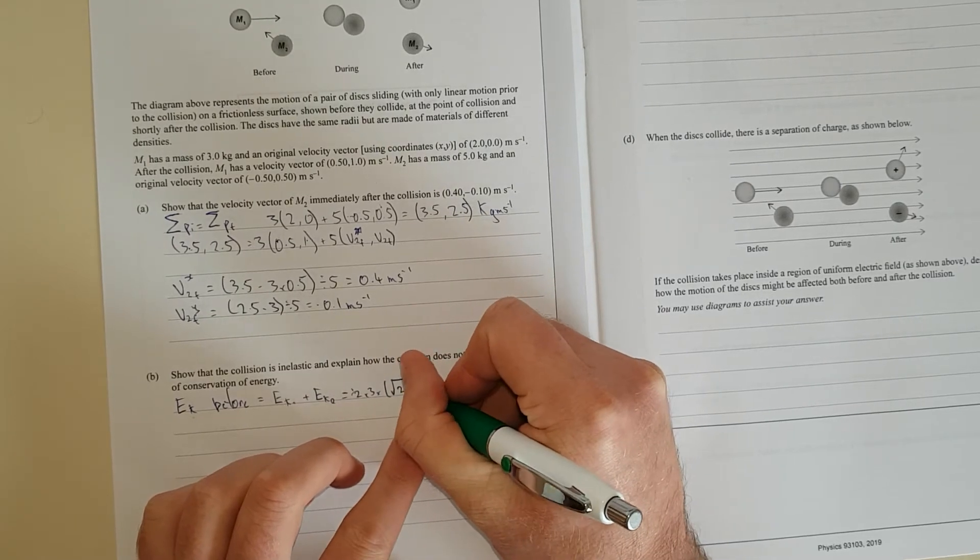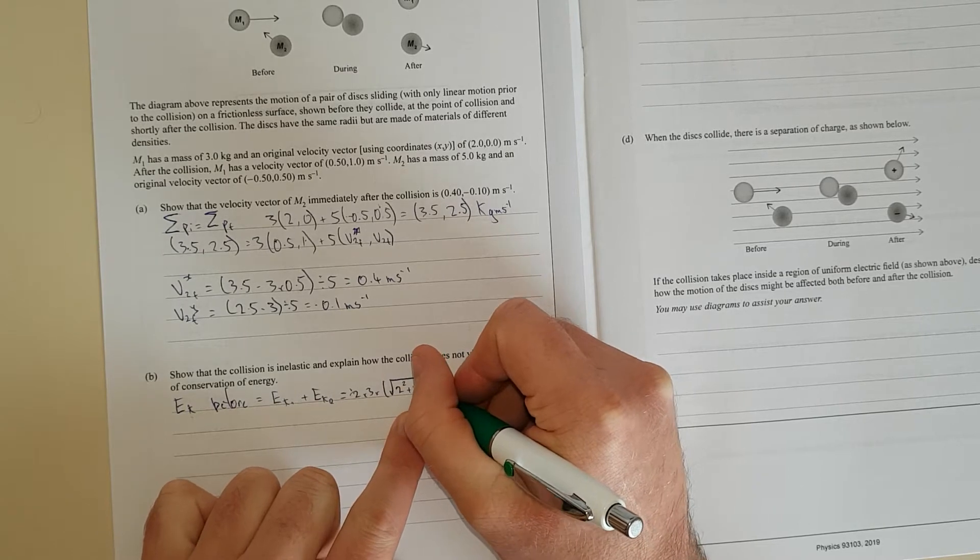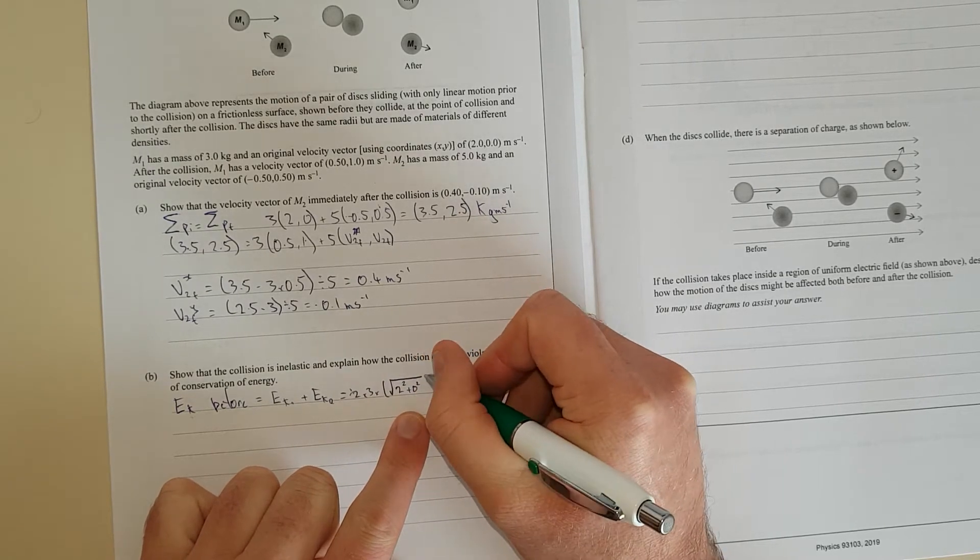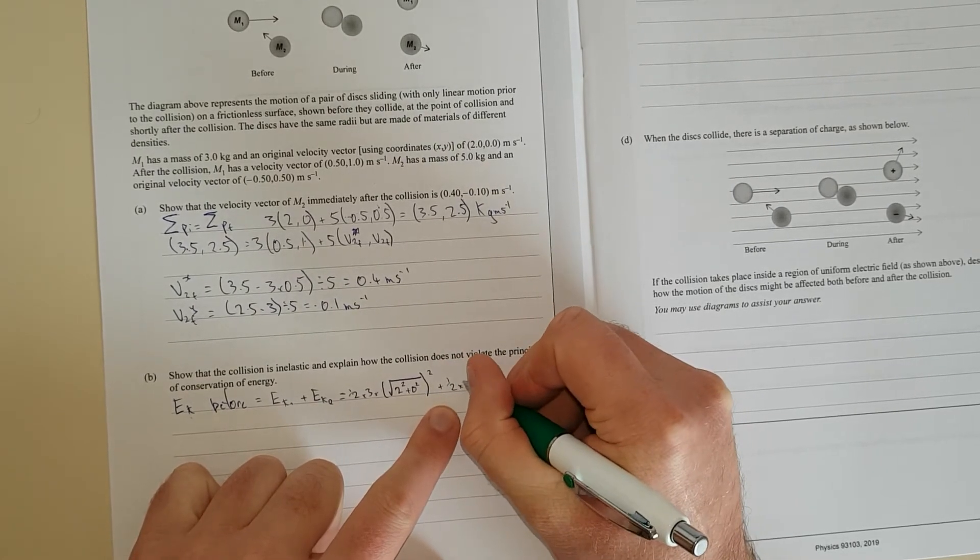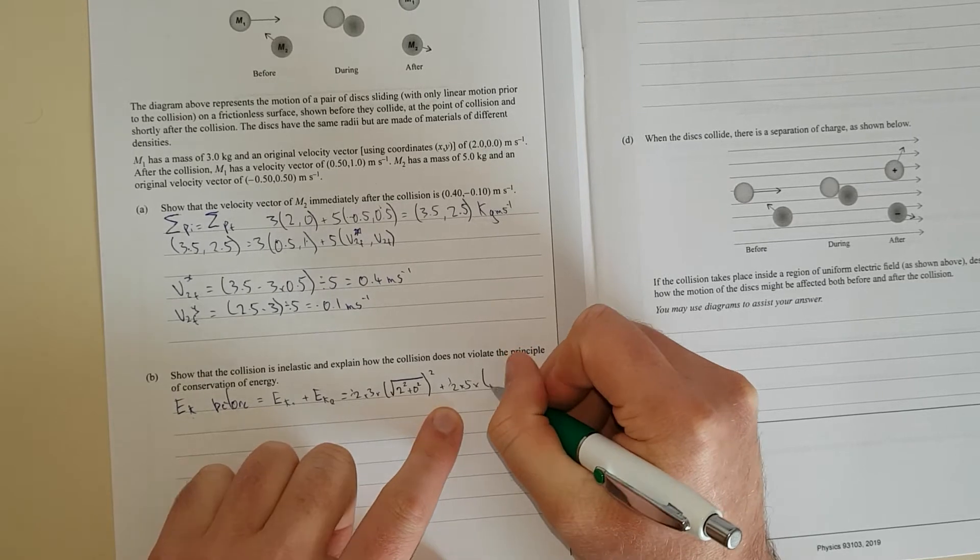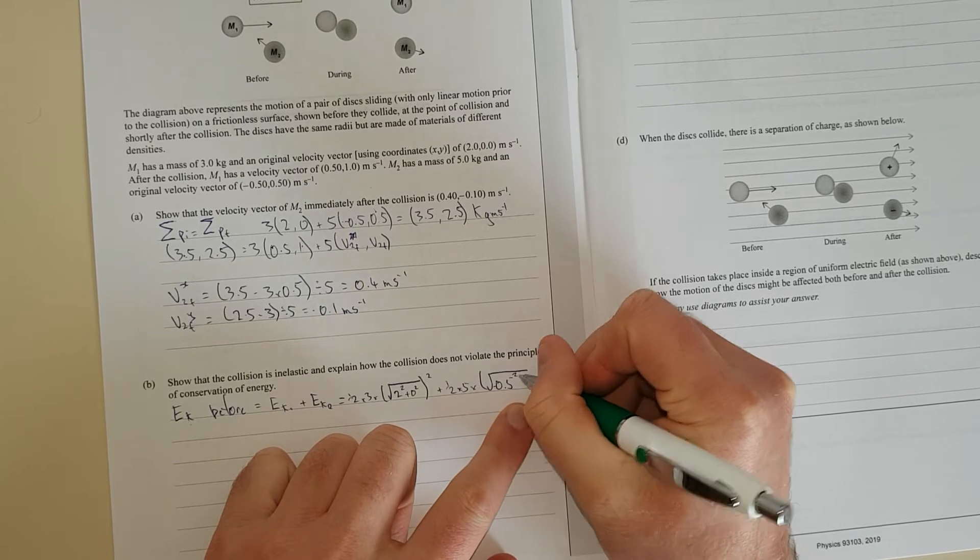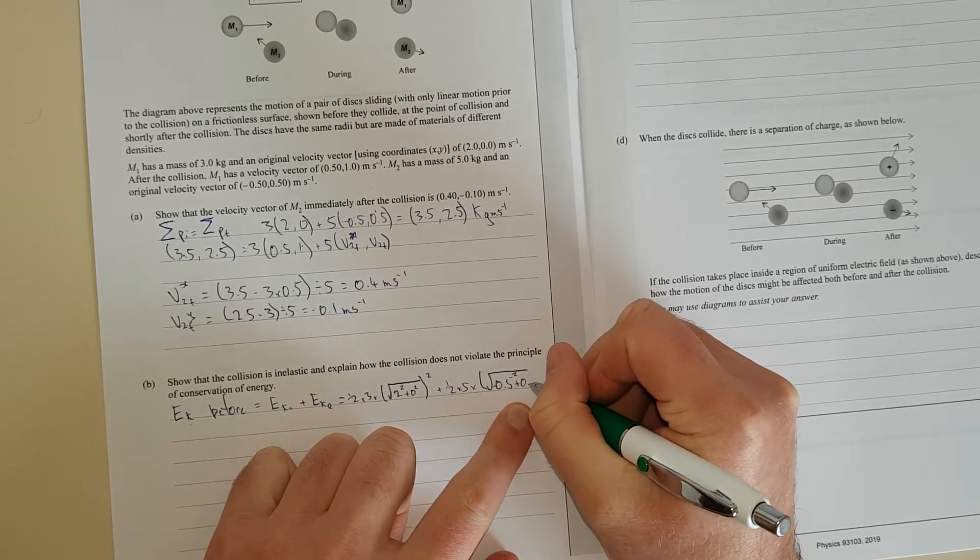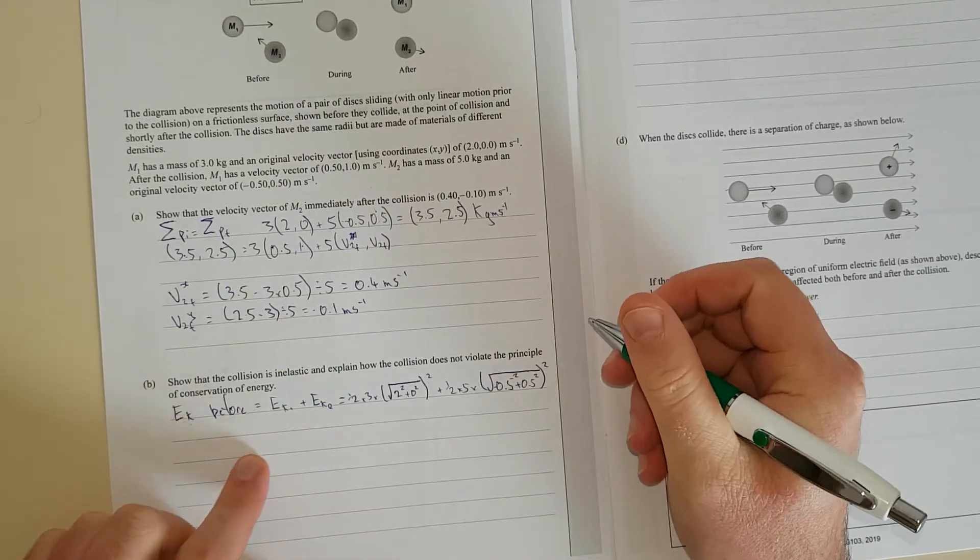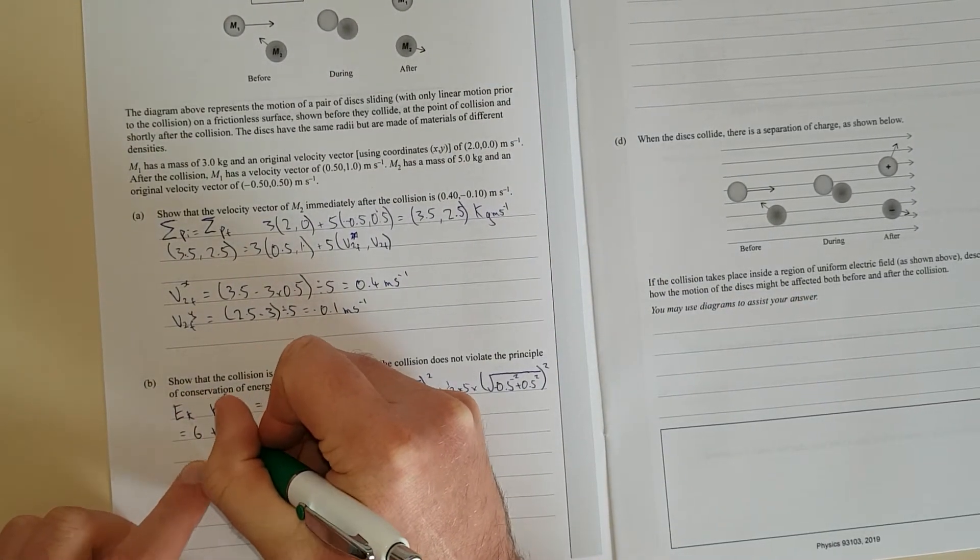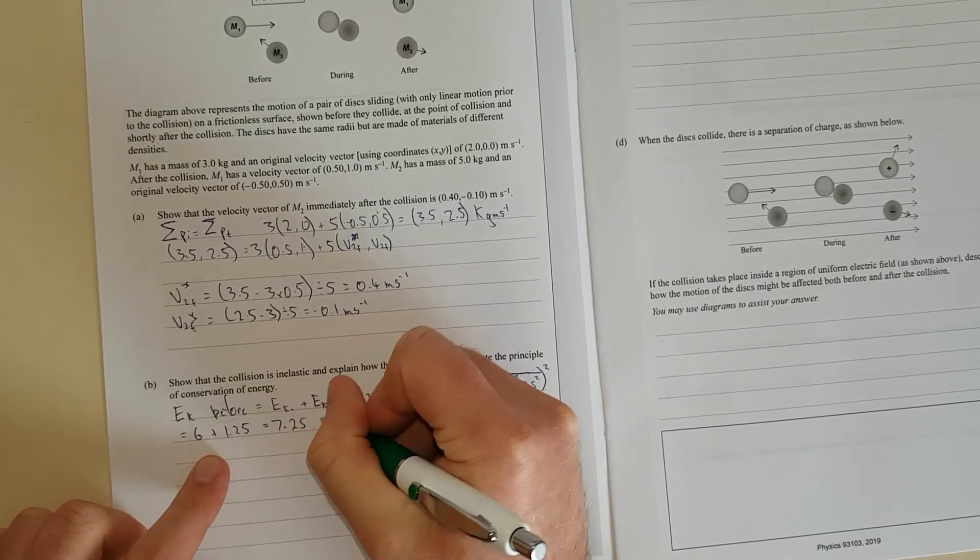So it's going to be half times 3 times (2² + 0²) plus half times 5 times (−0.5² + 0.5²), and that equals 6 plus 1.25, and that equals 7.25 joules.